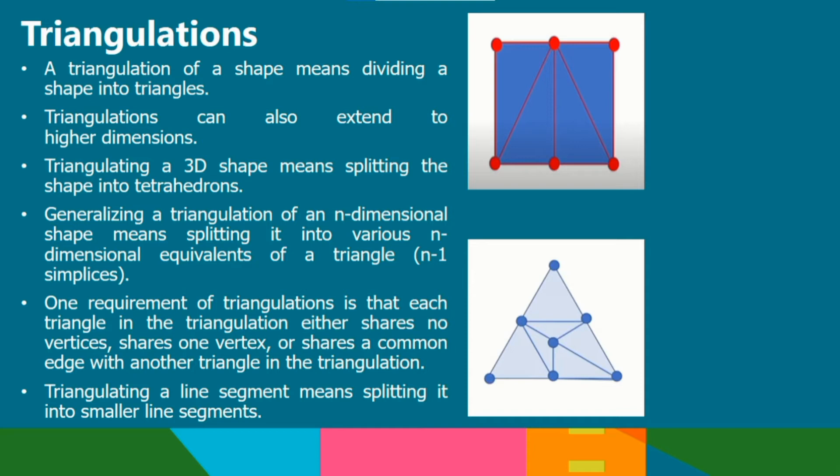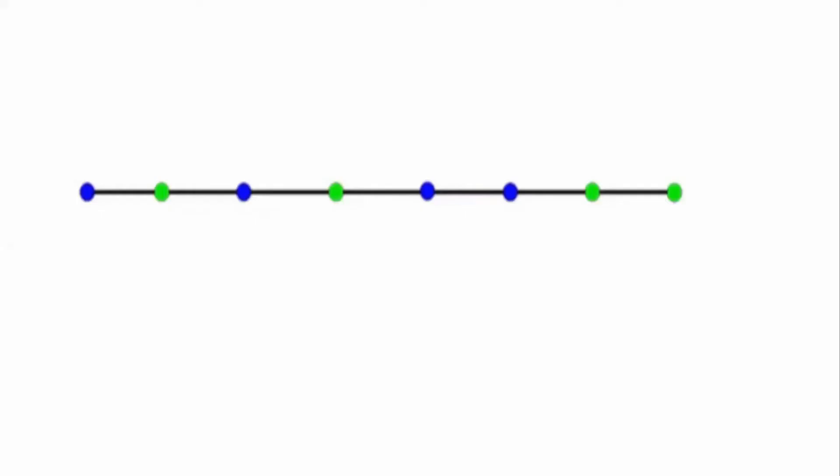One requirement of triangulations is that each triangle in the triangulation either shares no vertices, shares one vertex, or shares a common edge with another triangle in the triangulation. Triangulating a line segment means splitting it into smaller line segments.